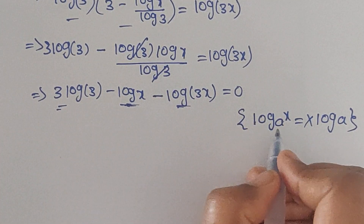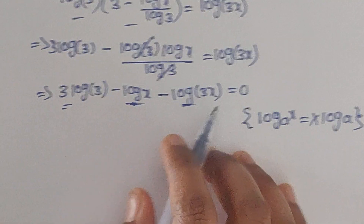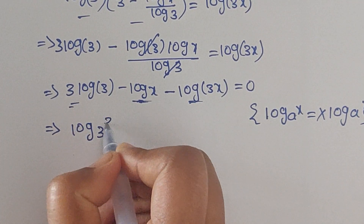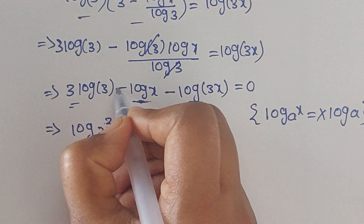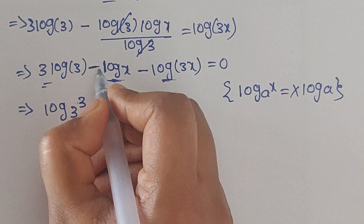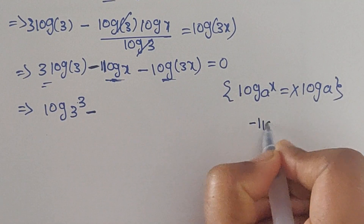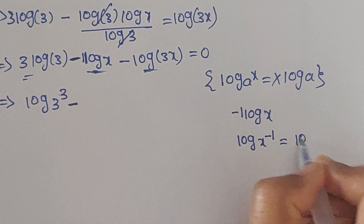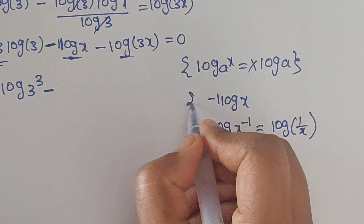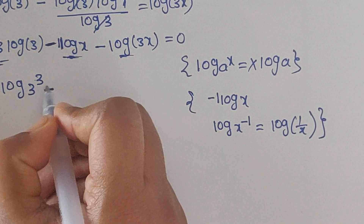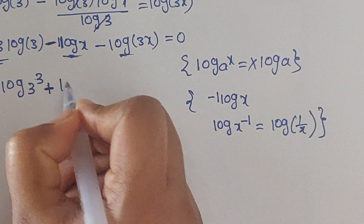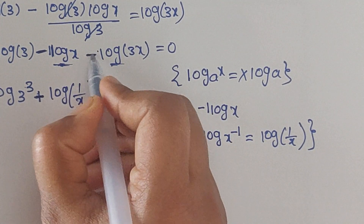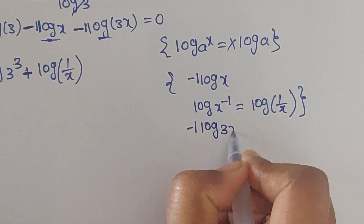Using this formula, since 3 log 3 is in the form of x log a, we can write log 3 to the power of 3. So that becomes log 27. For the minus log x term, we can write minus 1 times log x, which equals log x to the power of minus 1, which equals log 1 over x.